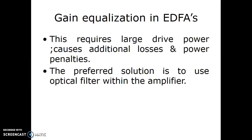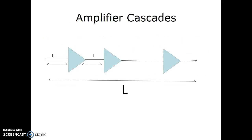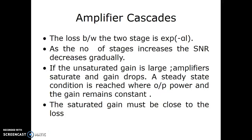The gain equation in EDFAs: This requires large drive power, causing additional losses and power penalties. The preferred solution is to use an optical fiber filter within the amplifier. For amplifier cascaders, instead of using a single amplifier, multiple amplifiers increase the amplification process. The loss between the two stages is exponential. As the number of stages increases, the SNR decreases gradually. If the unsaturated gain is large, amplifiers saturate and gain drops. A steady-state condition is reached for output power and the gain remains constant. The saturated gain must be close to the loss.